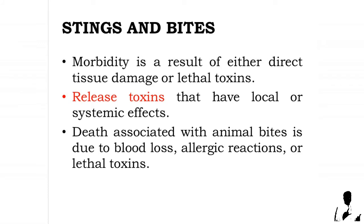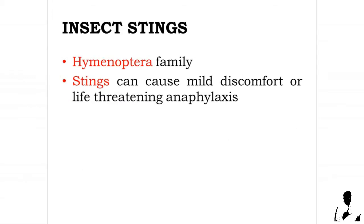Stings and bites: animals, spiders, snakes, and insects cause injury and even death by biting or stinging. Morbidity is a result of either direct tissue damage or lethal toxins. Tissue is lacerated, crushed, or chewed, while teeth, fangs, stingers, spines, or tentacles release toxins that have local or systemic effects. Death associated with animal bites is due to blood loss, allergic reactions, or lethal toxins. The Hymenoptera family includes bees, yellow jackets, hornets, wasps, and fire ants. Stings can cause mild discomfort or life-threatening anaphylaxis.